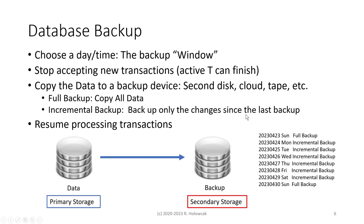How do we take a backup? The first thing is to choose a particular day and time when the backup can occur — sometimes called the backup window or maintenance window. Usually it's a time during the night when the number of transactions being processed is low. For a typical retail business open from 9 a.m. to 8 p.m., the middle of the night is a good time. We can take a backup once a day, once a week, or once a month, depending on the nature of the business. When the backup window is reached, the database stops accepting new transactions, allows currently running transactions to finish, giving a quiet moment where no transactions are running.